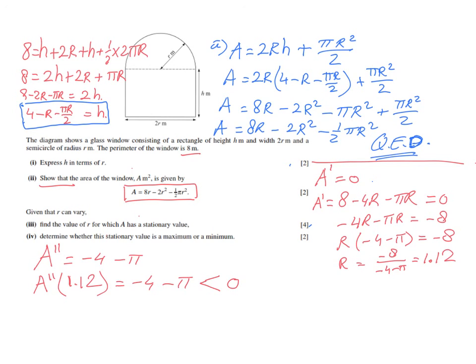Whenever the second derivative is negative, the stationary point is a maximum. If the second derivative were positive (greater than zero), it would be a minimum. Therefore, the stationary value at r ≈ 1.12 is a maximum.